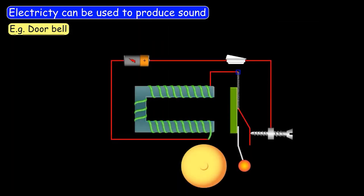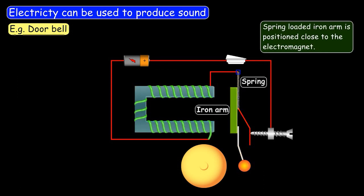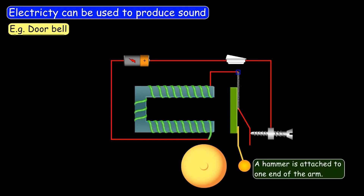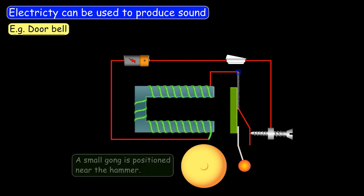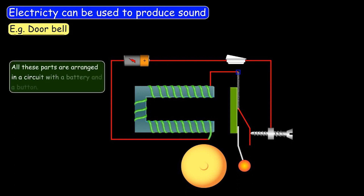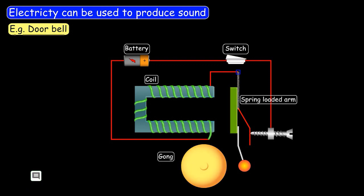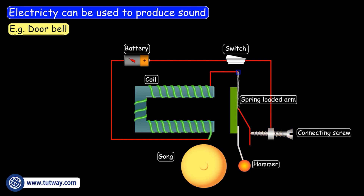Let's learn this with the example of an electric bell. The basic parts are: a coil of wire wound around a U-shaped iron core; a spring-loaded iron arm positioned close to the electromagnet; a hammer attached to one end of the arm; a small gong positioned near the hammer; and a contact screw that stays in contact with the spring-loaded arm when the circuit is open. All of these parts are arranged in a circuit with a battery and a button.